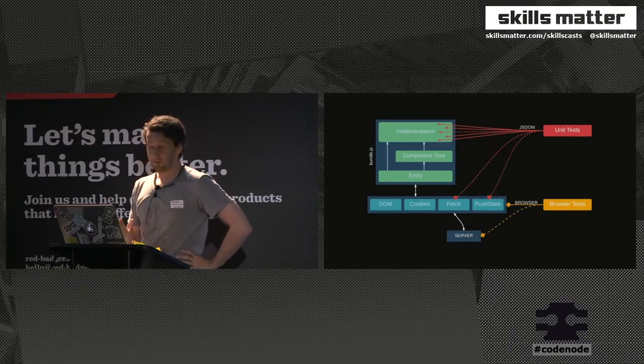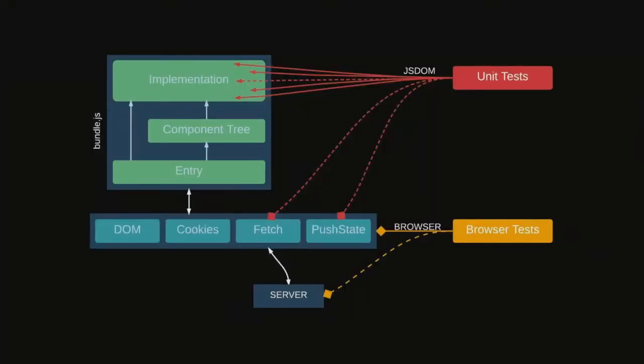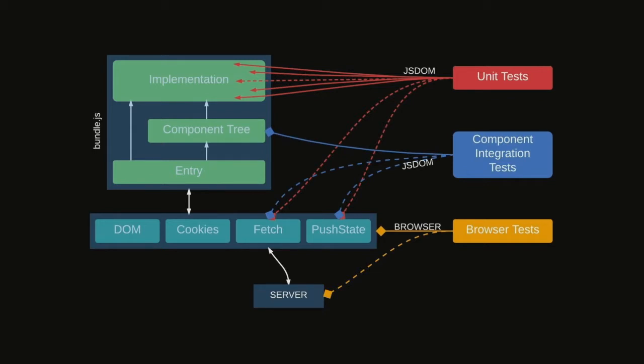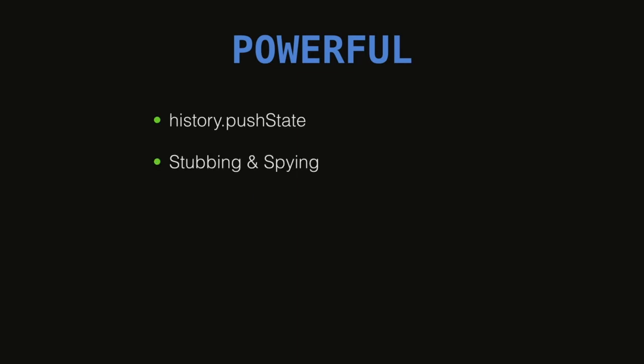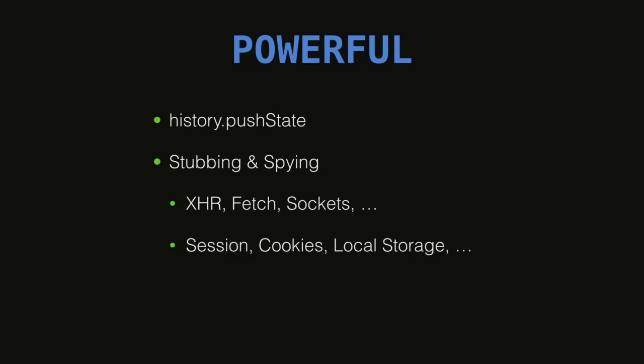We use the root of the component tree to create testing scenarios. We get a small contract, we're free to refactor, and it's implementation-agnostic. It's fast — React ends up being much faster than the browser. You can go completely browserless using JSDOM, super fast. You can stub out those boundaries — you don't have to make real requests to XHR, fetch, or sockets. You can stub cookies and whatever else. You have control over history push state, stubbing and spying, XHR, fetch, sockets, session, cookies, local storage — just like Node or your normal unit testing world.